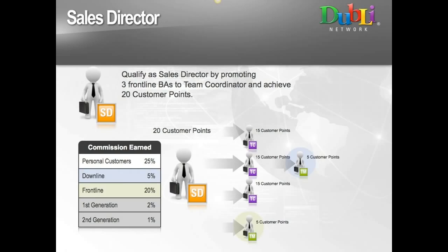If you use the TLA package, starting as team leader, enroll three who also select TLA — promoted to team coordinator with three. Help those three enroll three more also on TLA — promoted to sales director with a group of 12, versus 39 in the organic model. Both assume a perfect world, which we don't live in. Remember: we don't get paid based on rank; we get paid based on transactions and things happening in our business. Higher ranks allow you to maximize income as the business matures.